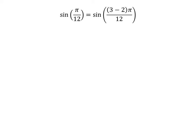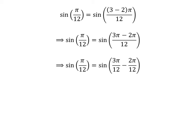We could have even applied 4 minus 3 instead of 3 minus 2. Expanding the numerator, we get sine of pi upon 12 is equal to sine of 3 times pi minus 2 times pi, all upon 12. The fraction pi upon 12 can be expressed as the difference of two fractions: 3 times pi upon 12 and 2 times pi upon 12. Cancelling out the common factor in the numerator and denominator gives us sine of pi upon 12 is equal to sine of pi upon 4 minus pi upon 6.